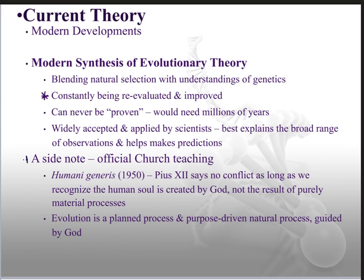There is an encyclical from 1950 called Humanae Generis, written by Pope Pius XII, which touches on evolution. The Pope said there is no conflict as long as we recognize the human soul is created by God and not the result of a purely material process. Evolution can be seen as a planned, purpose-driven natural process, meaning it's meant to arrive at the point it's arriving at — not completely random, with possibly some other force at work.